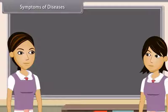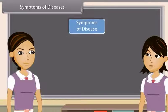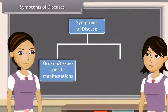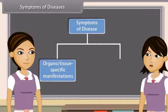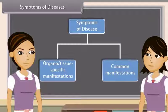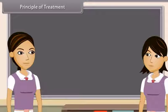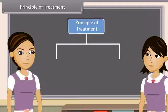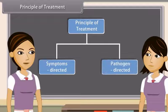Symptoms of Diseases: Ankita, I want to tell you that disease symptoms are of two types: organ or tissue specific manifestations and common manifestations. The principle of treatment of various diseases are symptom-directed and pathogen-directed.